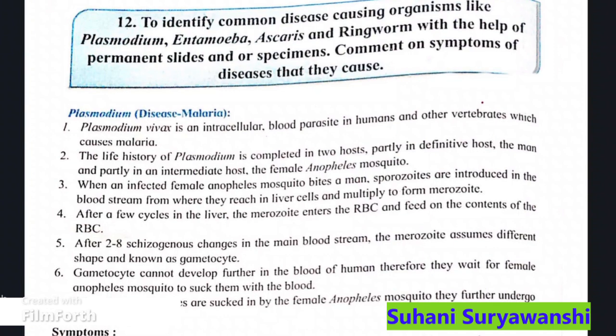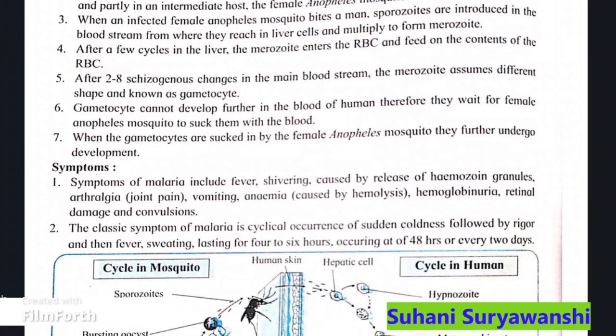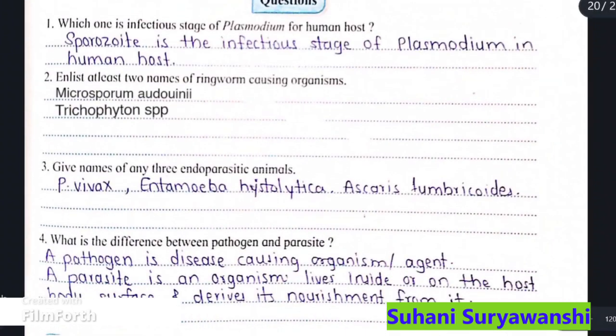So, Section B Practical No. 12 is to identify common disease-causing organisms like Plasmodium, Entamoeba, Ascaris, and ringworm, with the help of permanent slides and specimens. And comment on the symptoms of the diseases that they cause.